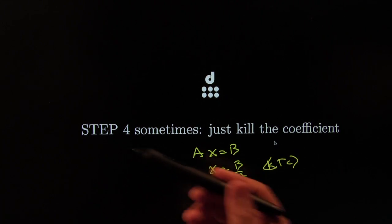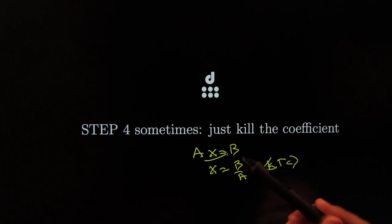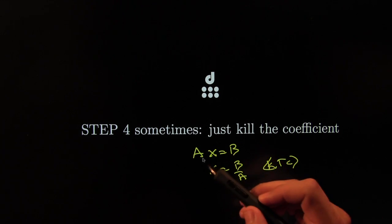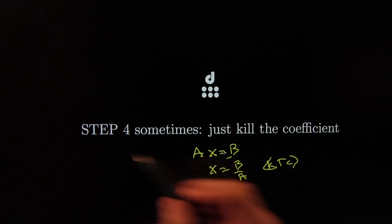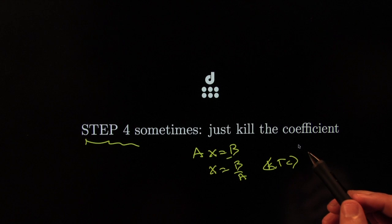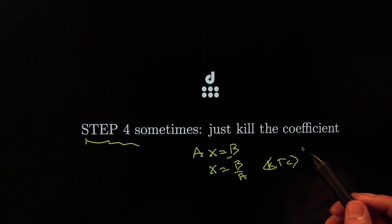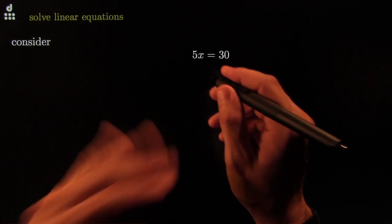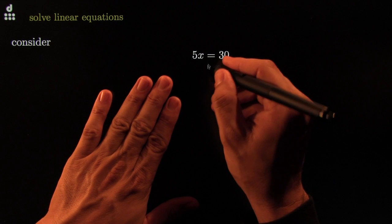But this will be your last step. Sometimes the equation doesn't look like this. And you have to do some work before it looks so nicely like this. That's why this is step number 4. So let's go on to step number 3. So before we get to step number 3, let's make sure we all have a good handle on step number 4. Kill the coefficient.